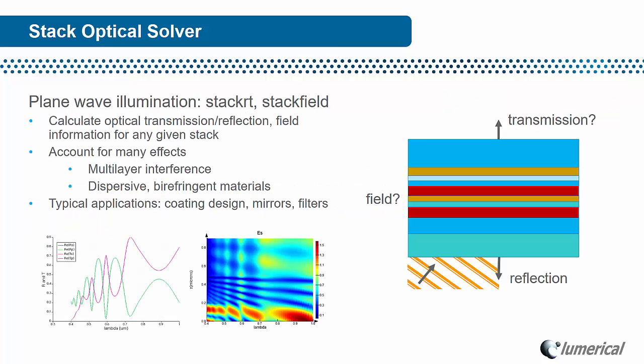Using Plane Wave Illumination, one can calculate the optical transmission, reflection, and the E and H field information for any given stack. This accounts for effects like interference between multiple layers, dispersive and birefringent materials, and can often be used for applications like optical coating designs, mirrors, and filters.